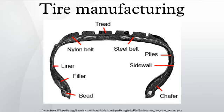Belt Package: Belts are calendared sheets consisting of a layer of rubber, a layer of closely spaced steel cords, and a second layer of rubber. Belts give the tire strength and dent resistance while allowing it to remain flexible. Passenger tires are usually made with two or three belts.